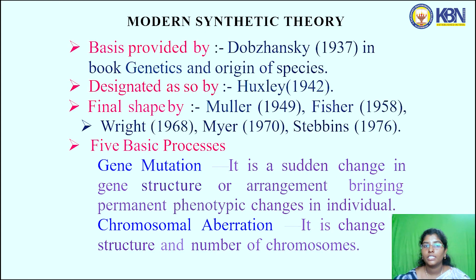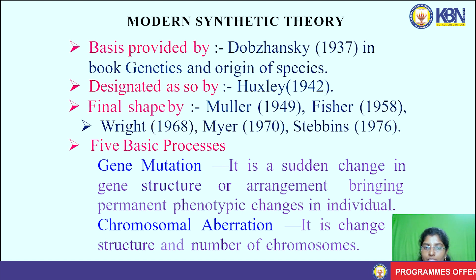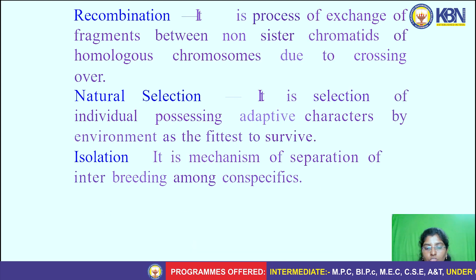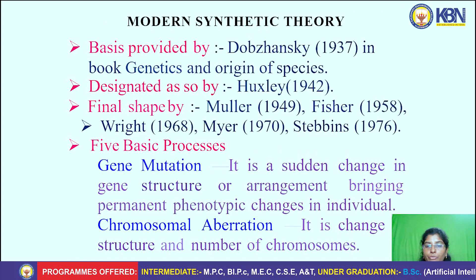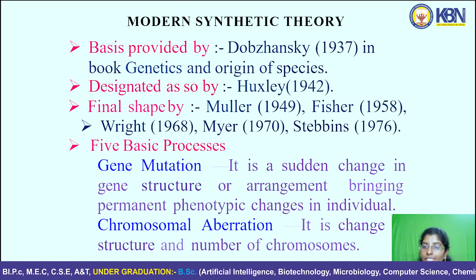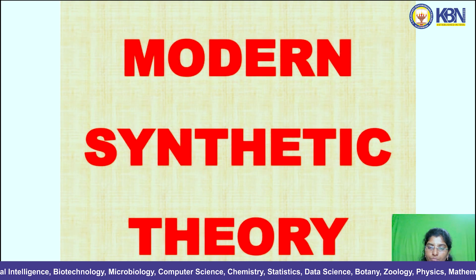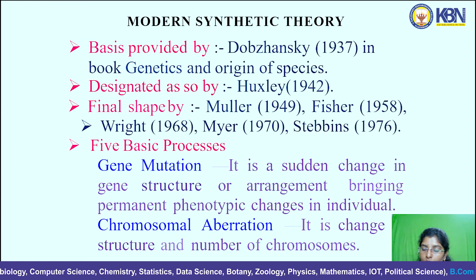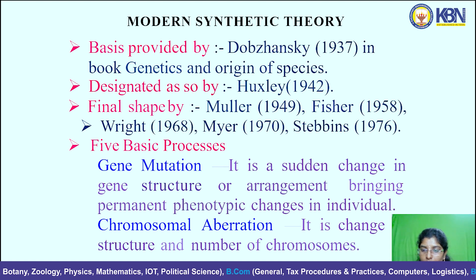Modern Synthetic Theory: the basis was provided by Dobzhansky in 1937 in the book 'Genetics and the Origin of Species,' designated as such by Huxley in 1942, and given final shape by Muller. It has five basic processes: gene mutation, chromosomal aberration, recombination, natural selection, and isolation. Gene mutation is a sudden change in gene structure or arrangement bringing permanent phenotypic changes in the individual, due to changes in DNA structure.